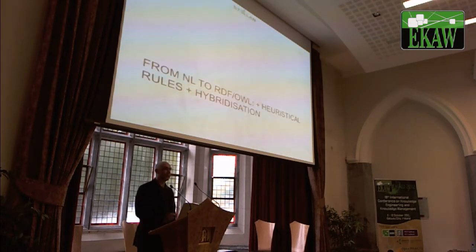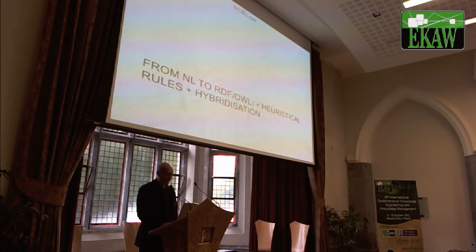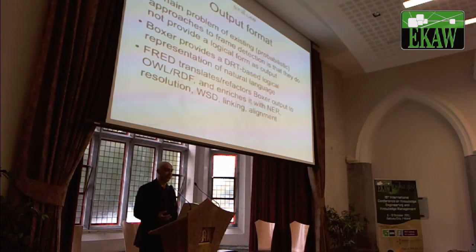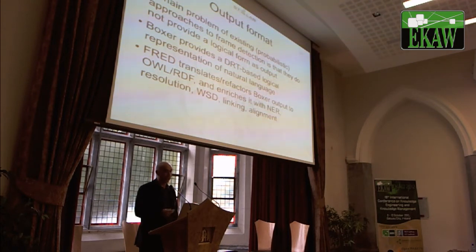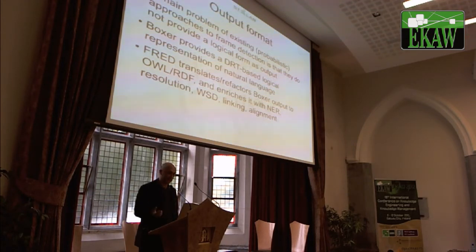Now let's see what we do with that. Once we know we can detect frames with reasonable performance, let's see how we can move this to the semantic web for effective use. The output format is a main problem of existing probabilistic approaches because they do not provide the logical form as output. Boxer provides a DRT-based logical representation, but as we have seen, this is not as amenable as expected to RDF and OWL. What we do is translate and refactor Boxer's output to OWL and RDF, then enrich it with named entity recognition, resolution, word sense disambiguation, linking, and alignment.